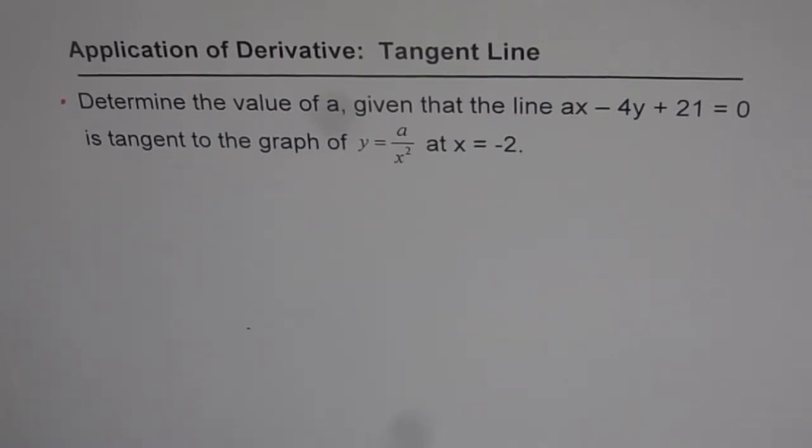Determine the value of A given that the line AX minus 4Y plus 21 equals 0 is tangent to the graph of Y equals A over X square at X equals minus 2.